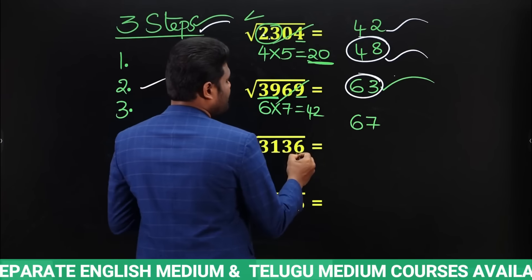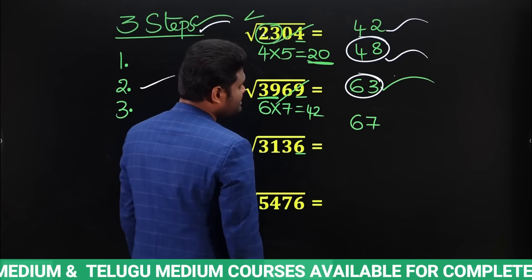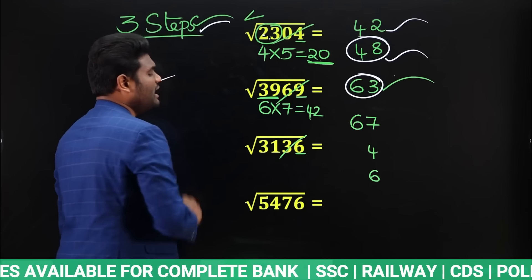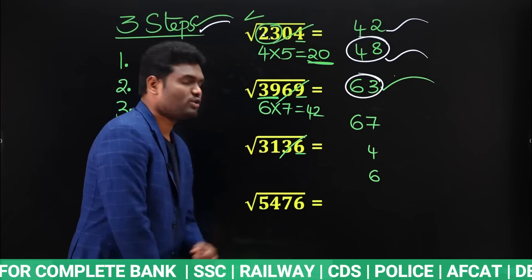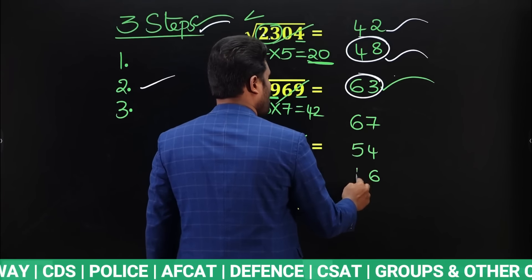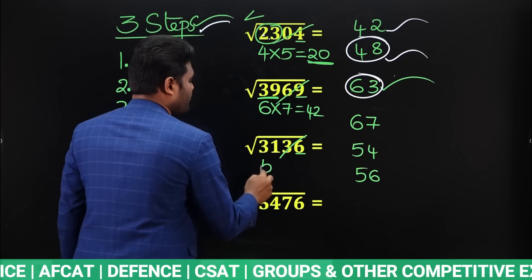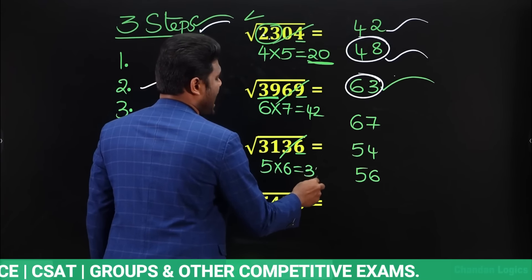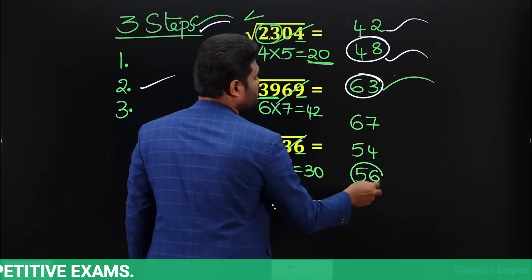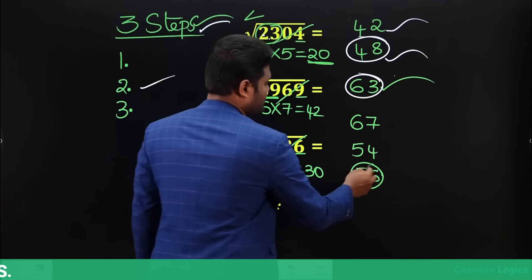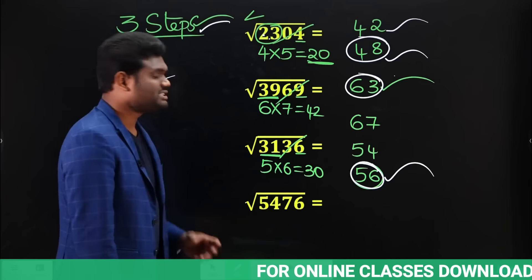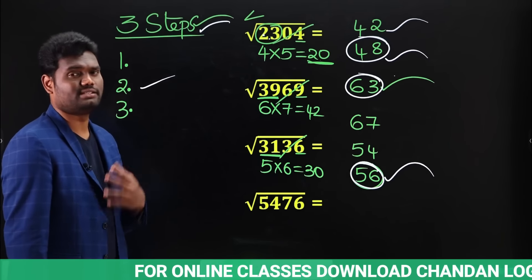For √3136: last digit is 6, possibilities are 4 or 6. Strike off last two digits — remaining is 31. Perfect square close to 31 and less than 31 is 5² = 25, so this should be 54 or 56. Multiply 5×6 = 30. Compare: 31 is bigger than 30, so answer is the bigger value — 56. So √3136 = 56. Very simple — fraction of seconds once you know these three steps.